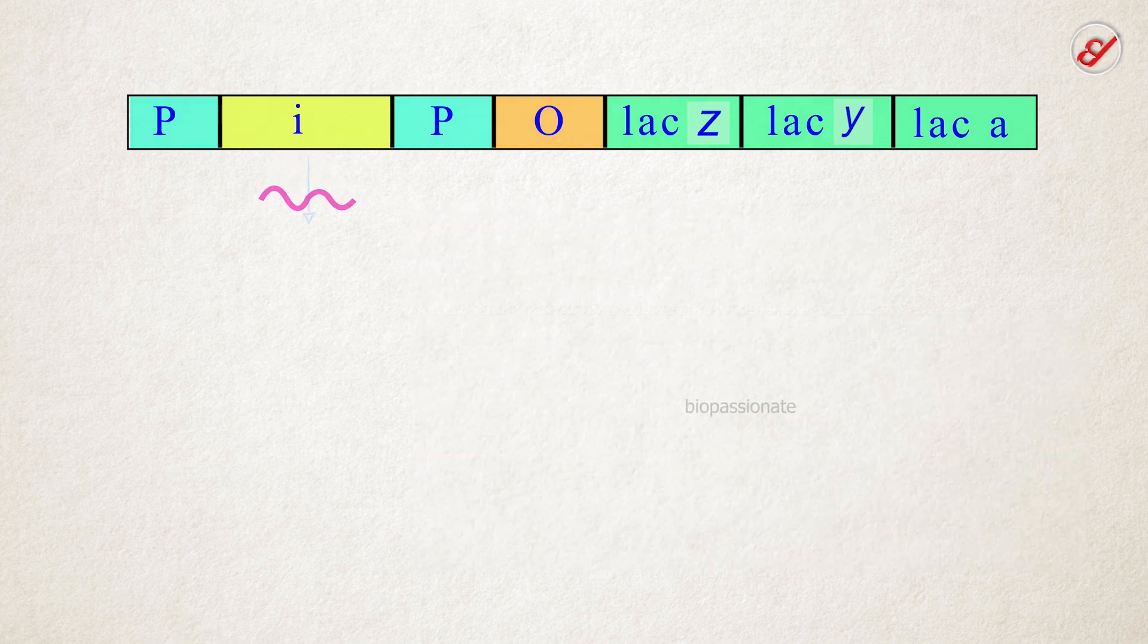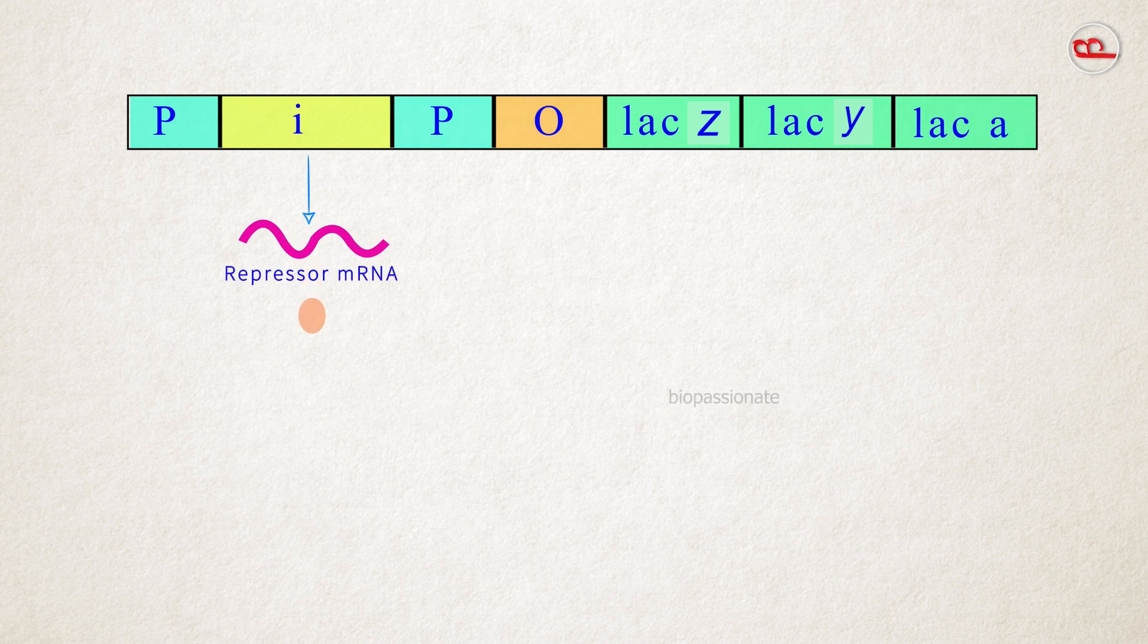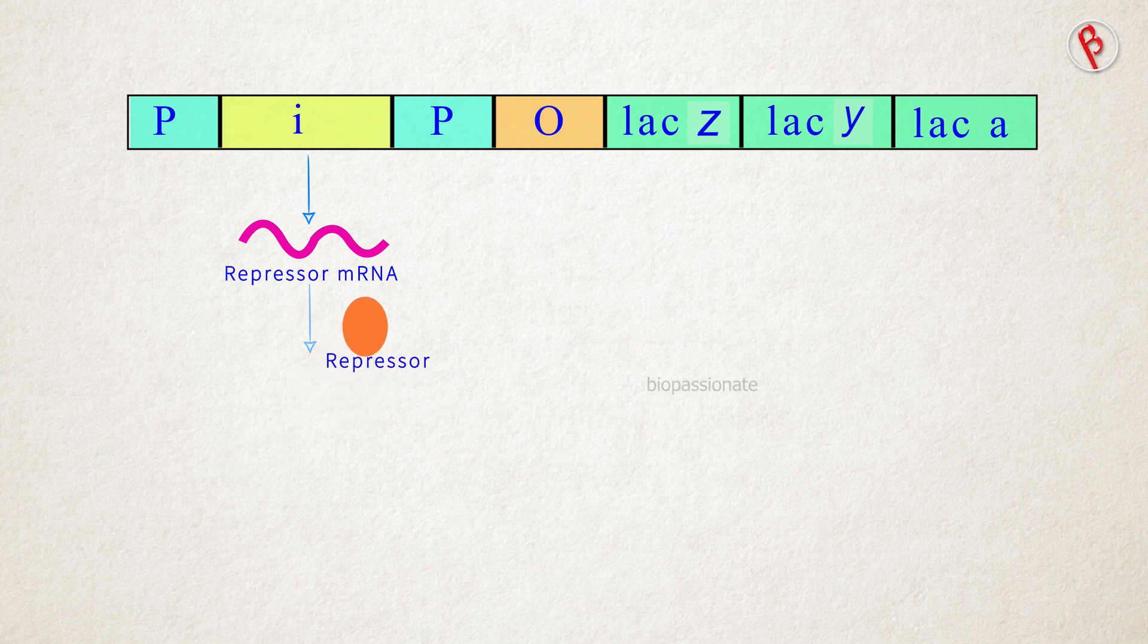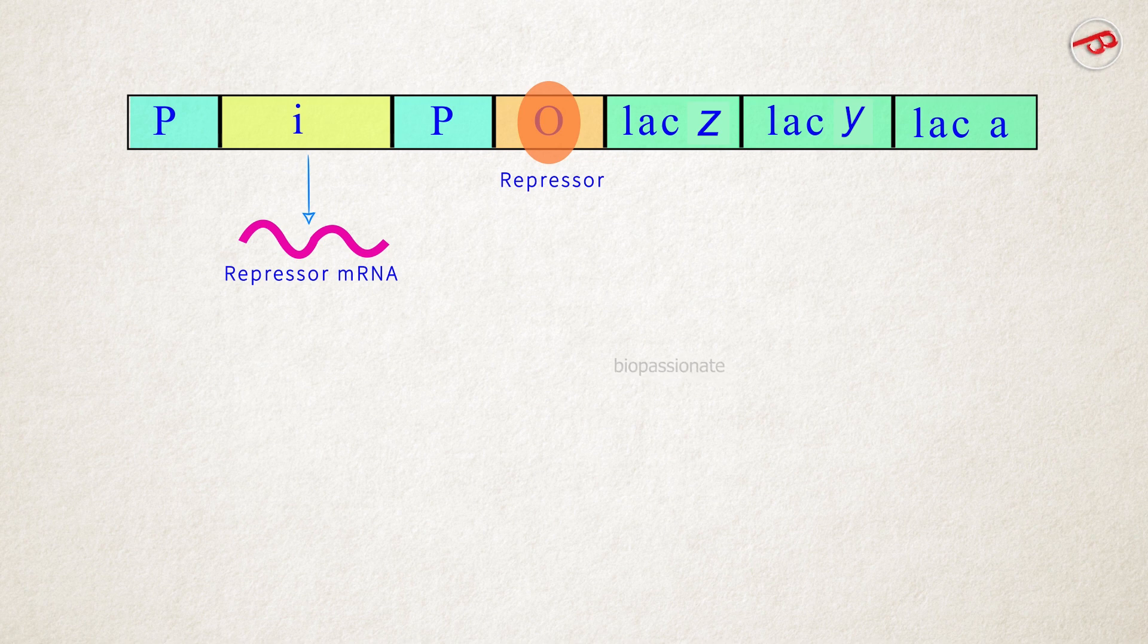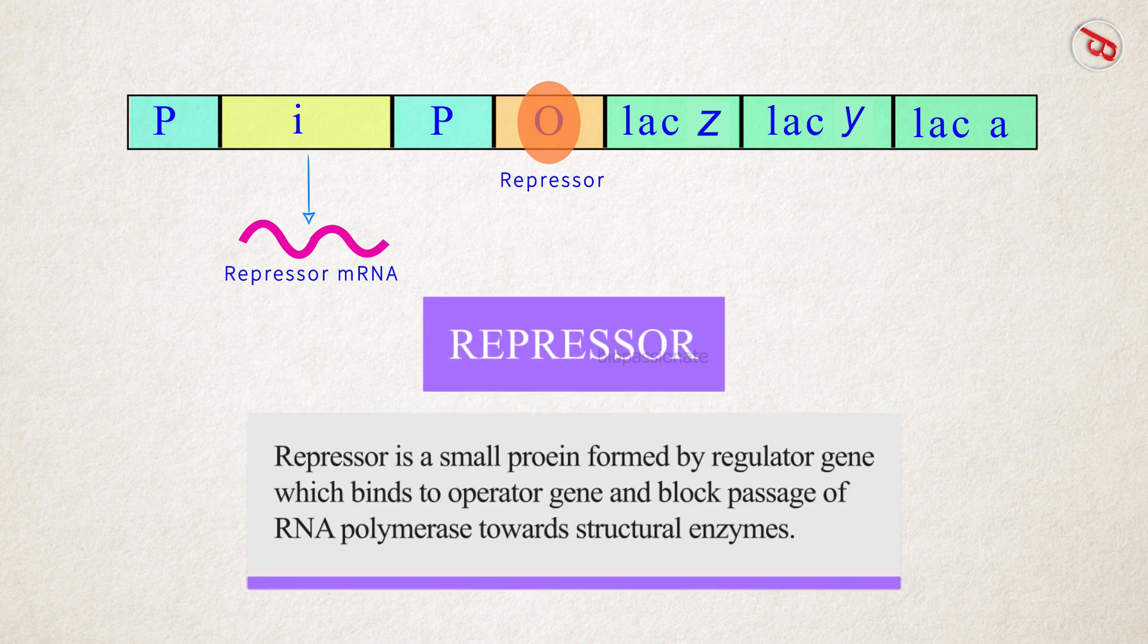The gene i is called the regulator gene which codes for the repressor of the lac operon. Repressor is a small protein produced by regulator gene which binds to the operator and blocks the passage of RNA polymerase towards structural genes.